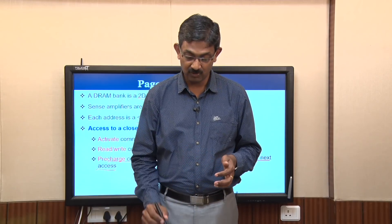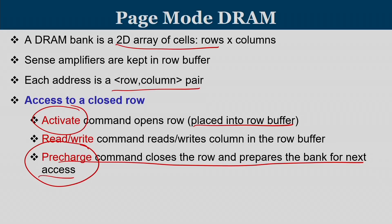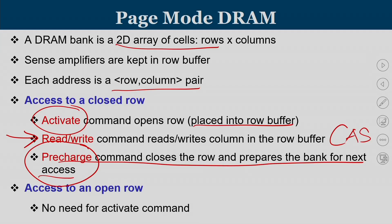There are three basic operations. First, activate: contents of a row are moved to the row buffer. Second, precharge: contents of the row buffer go back to the appropriate row. Third, read or write command — also known as column address strobe — where data is already in the row buffer and the column address selects which data is extracted. Once a row is already open, you need not give an activate command; only a read or write command is needed.